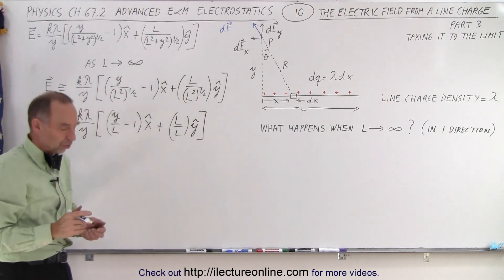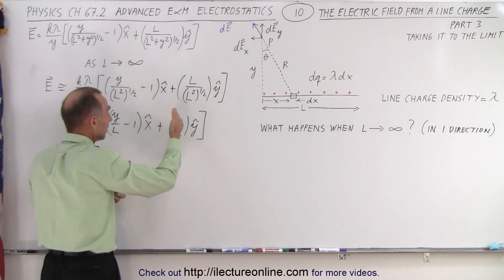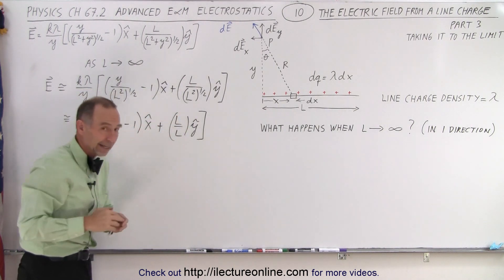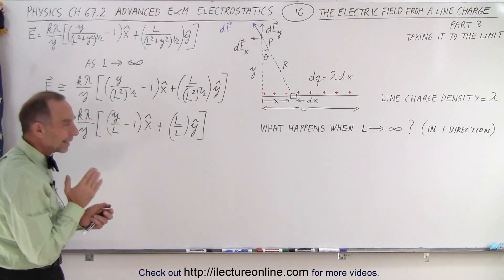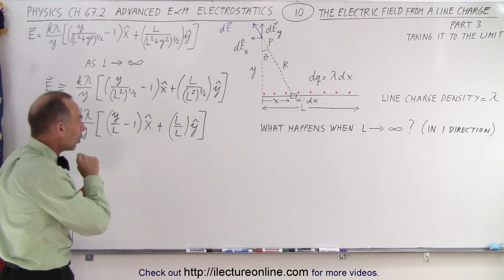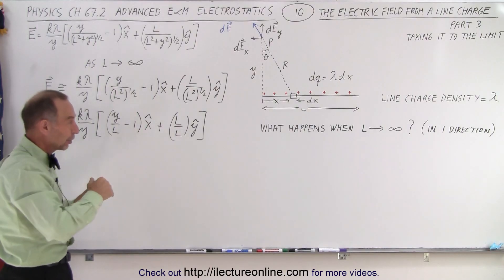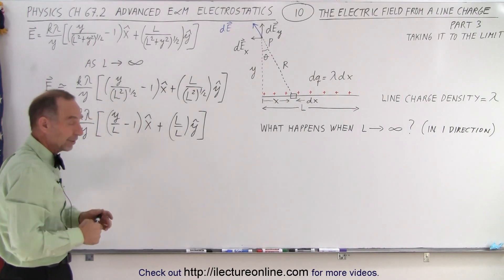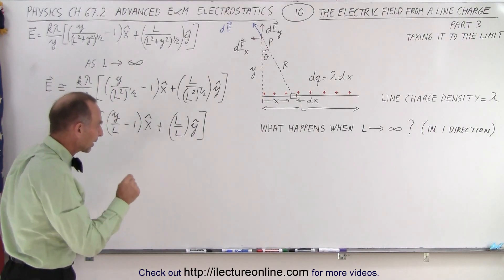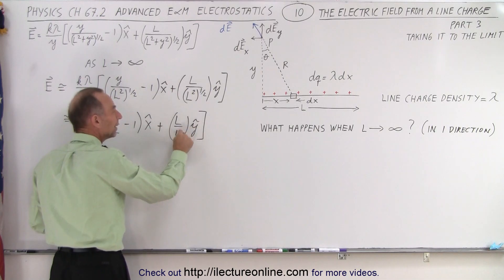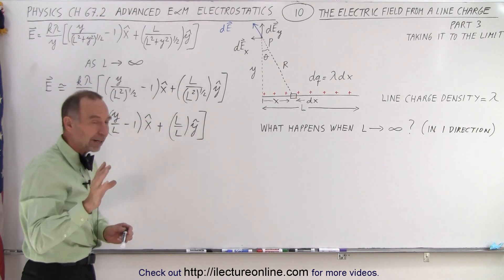So this can now be written as K lambda over Y. We have now Y over L, minus one, in the X direction, plus L over L in the Y direction. Now this is often misunderstood — because when people look at this and say, 'you have L over L, and if you let L go to infinity, infinity divided by infinity is undefined.' You're absolutely correct, that's mathematically correct. However, we don't let L become infinity. We let L approach infinity — make it larger and larger and larger, but never quite infinity. You can always add something to a very large number. Then this ratio will go to one in the limit as L approaches infinity, but doesn't actually become infinity.